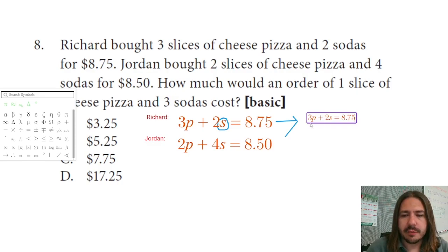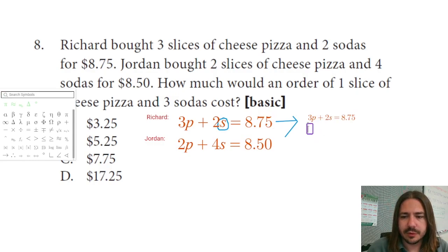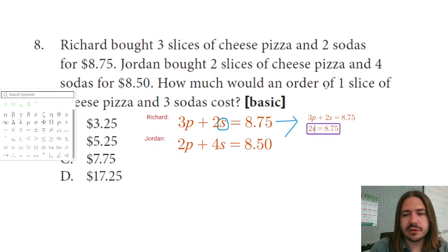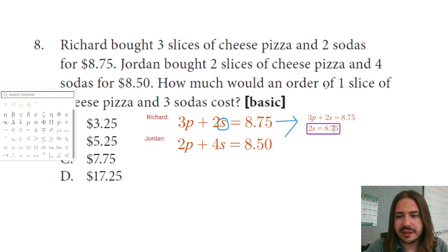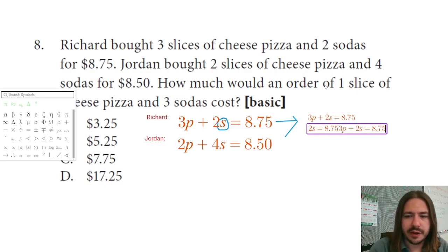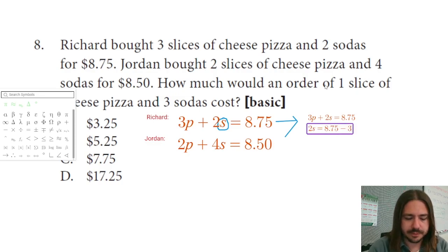I'm going to subtract 3P from both sides. That's going to give me 2S equals 8.75 minus 3P.